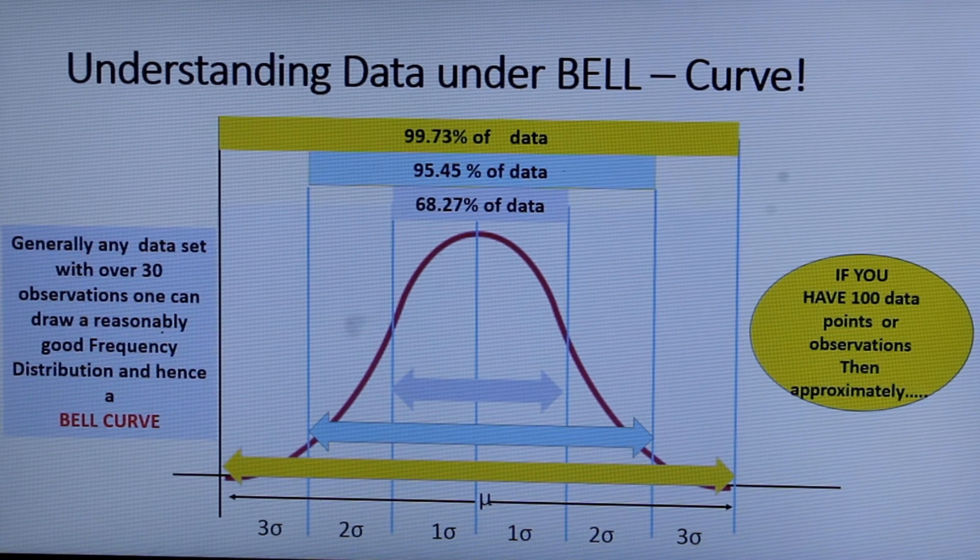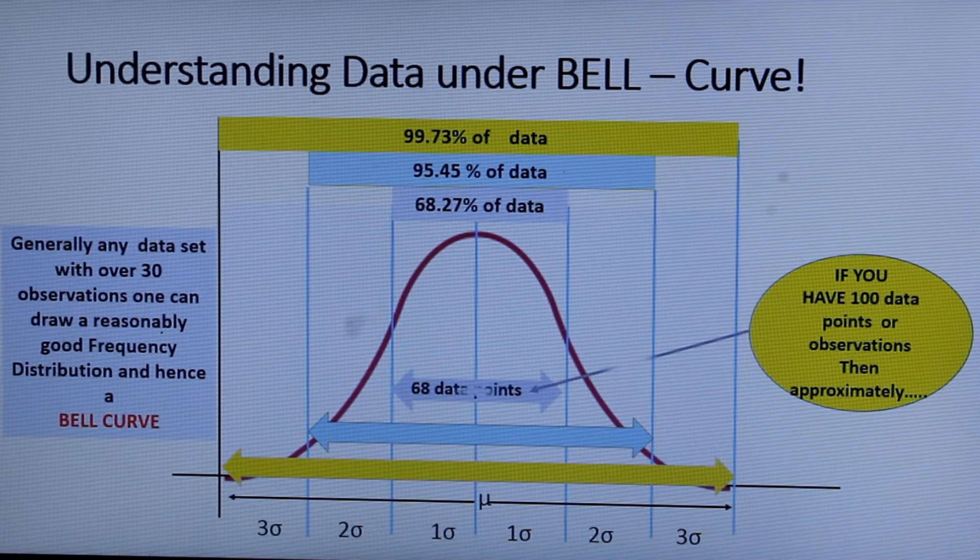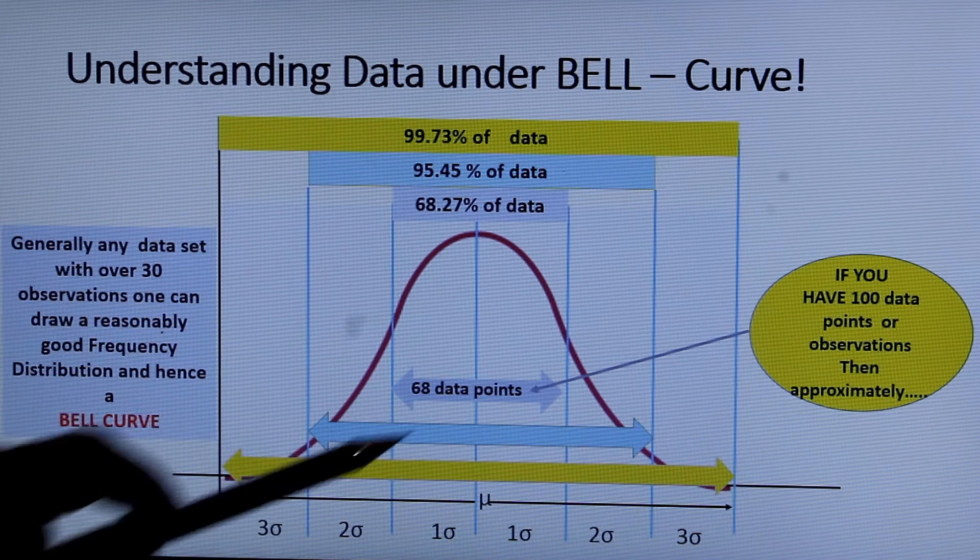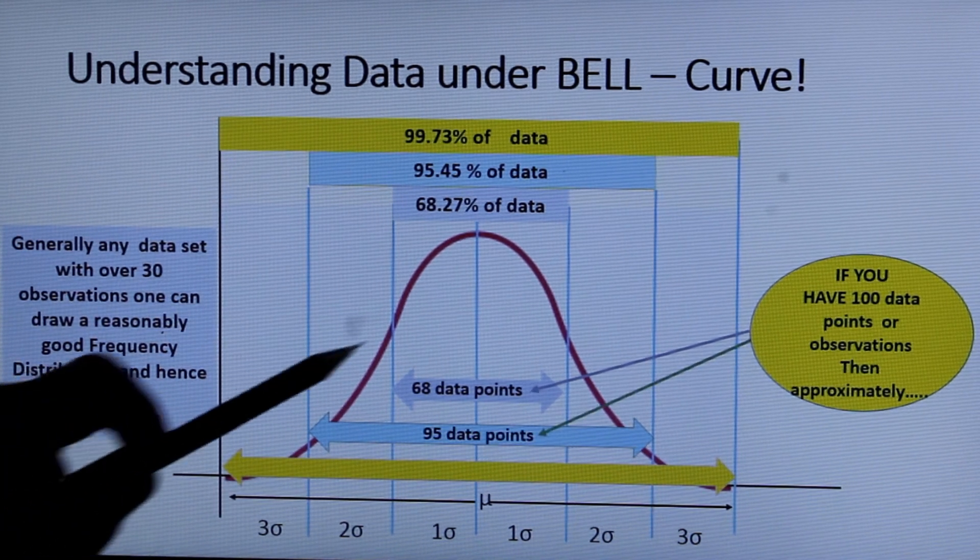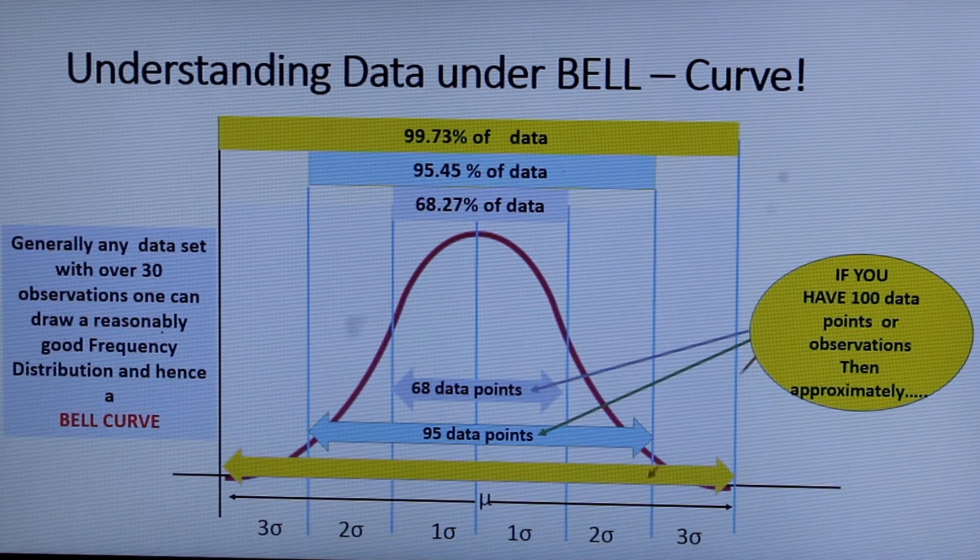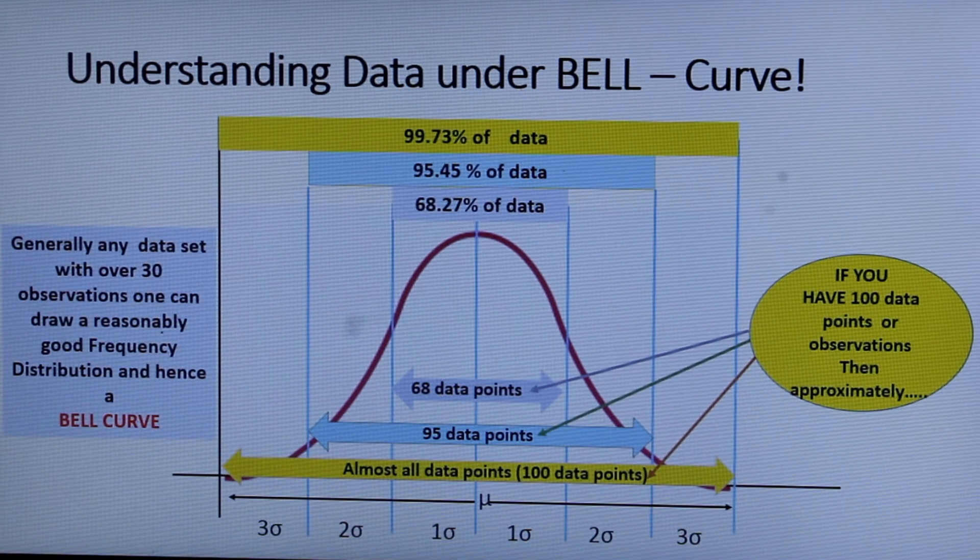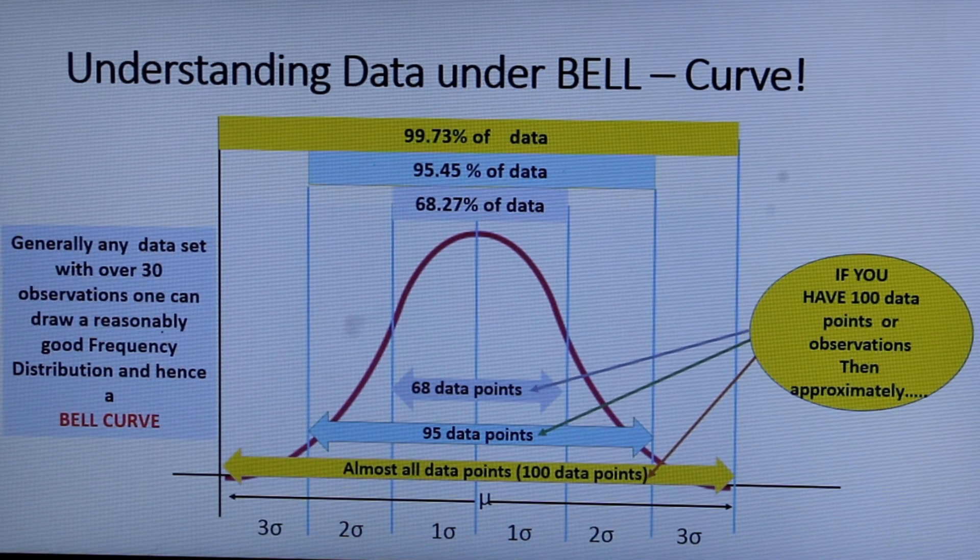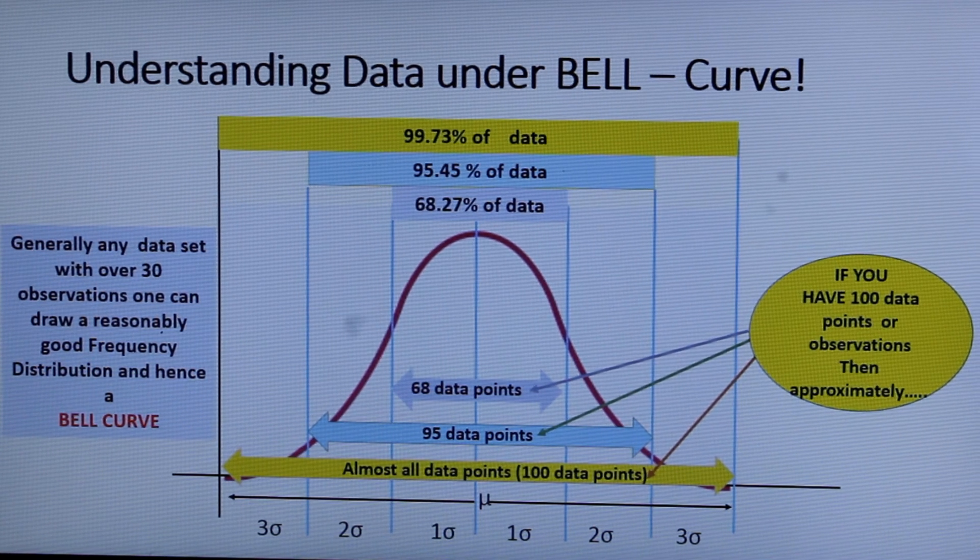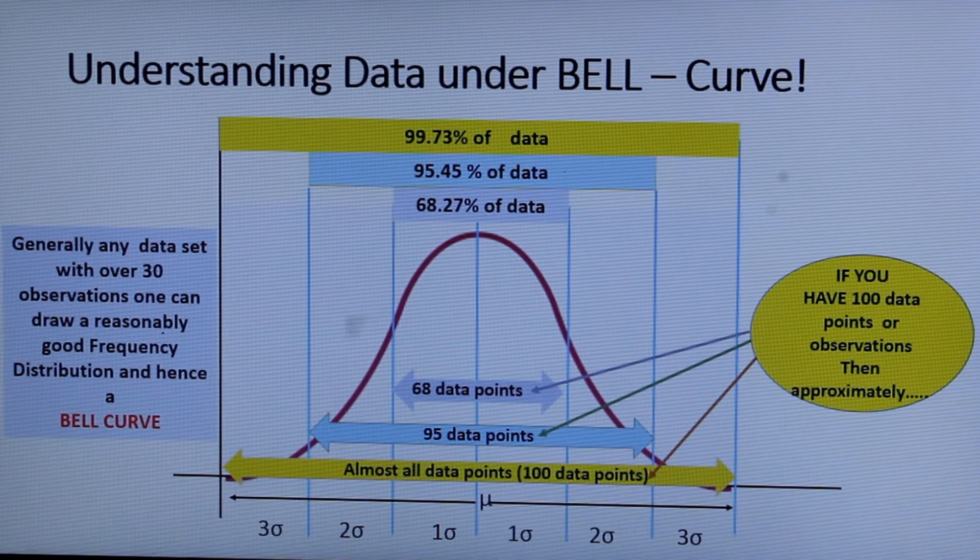Suppose you have 100 data points or observations then approximately 68 data points will fall in this zone and 95 points will fall in two sigma zone and almost all the data points fall under three sigma zone. So that gives a very good idea about the area under bell curve and with respective standard deviation, the significance of one, two and three standard deviation in a bell curve.